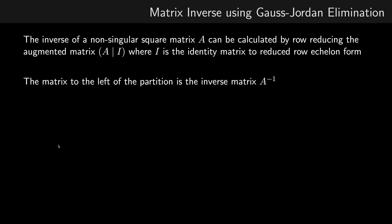The inverse of a square matrix A can be calculated by row reducing the augmented matrix (A|I), where I is the identity matrix, to reduced row echelon form. The matrix to the left of the partition when that augmented matrix is in reduced row echelon form is the inverse matrix A^-1.